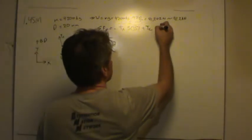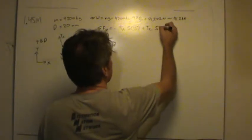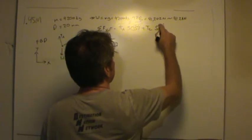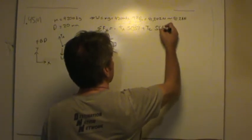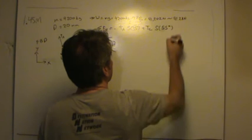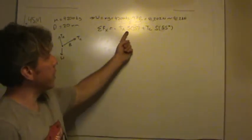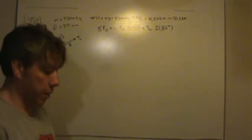It gives me the component of the tension in rod A in the x direction plus TC, there's the rod going off to C, times sine of 55. Those don't look much like fives. They look like s's.